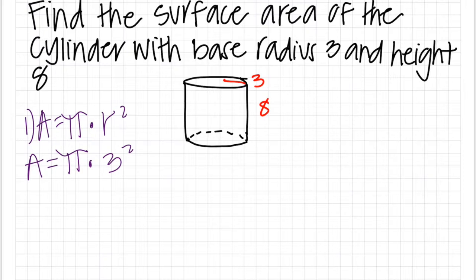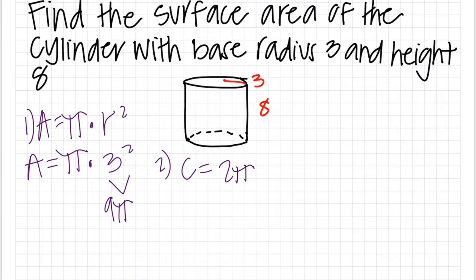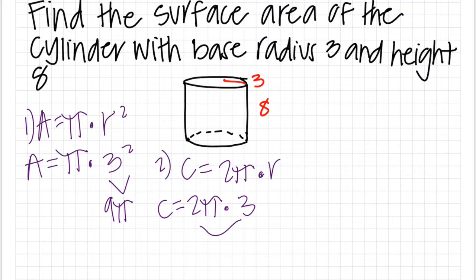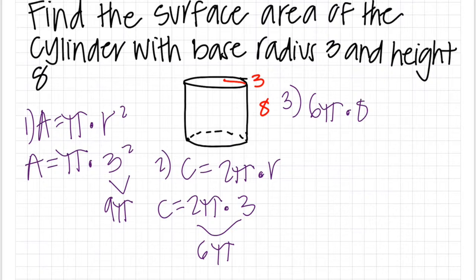Afterwards, we find the answer of 3 to the power of 2, which equals 9, so the area is 9π. The second step is to find the circumference using the formula C equals 2π multiplied by r. Plugging in our numbers gives C equals 2π multiplied by 3, which equals 6π. We then multiply 6π by 8 to find the surface area of the sides of the cylinder, which equals 48π.